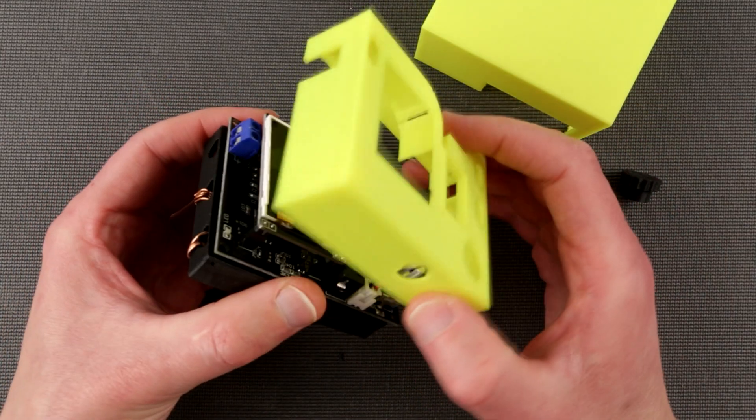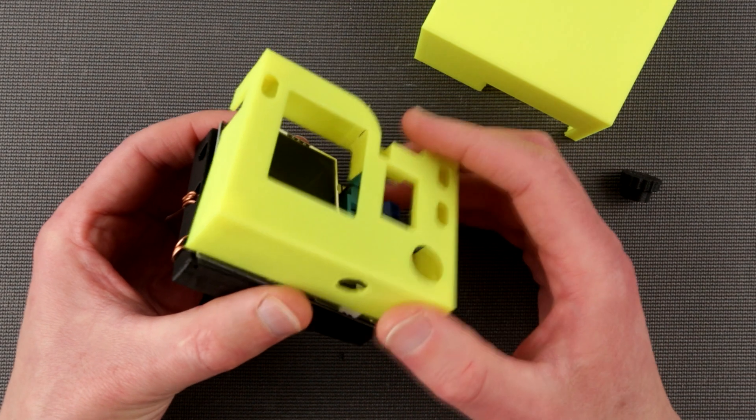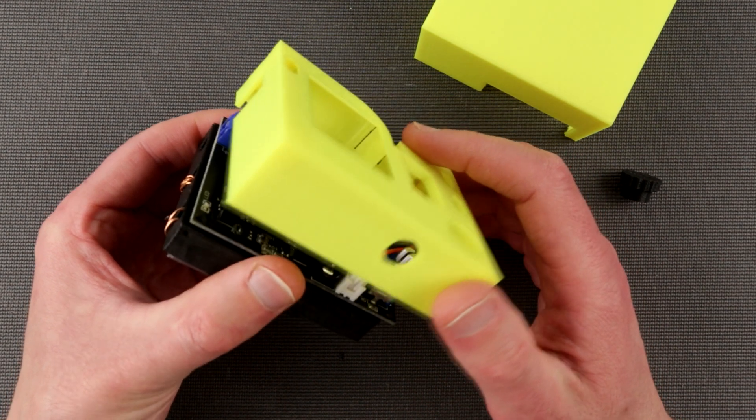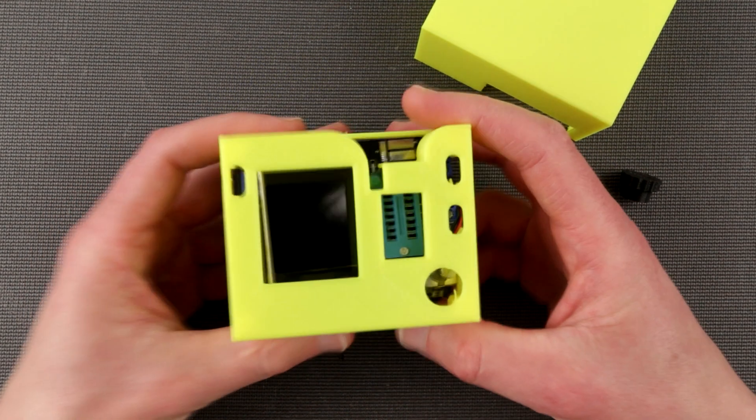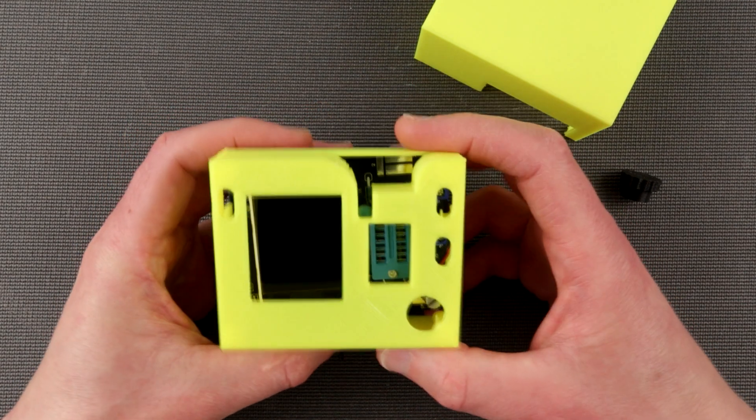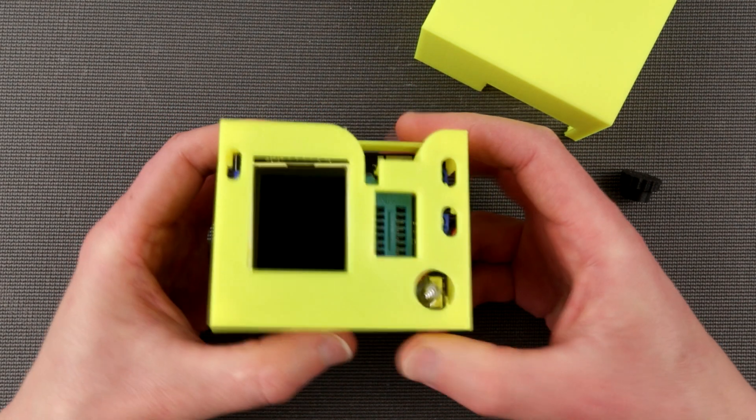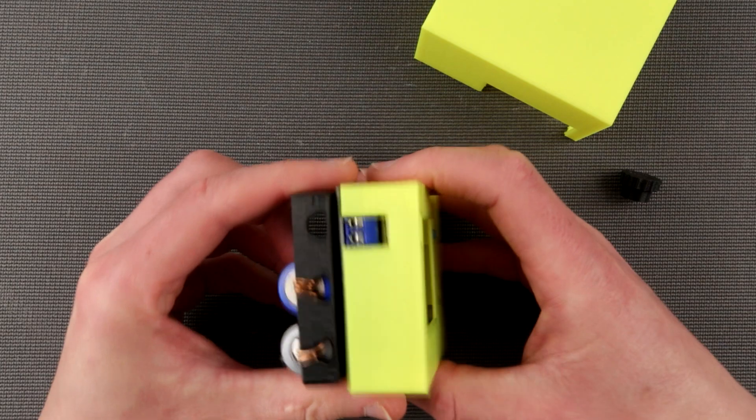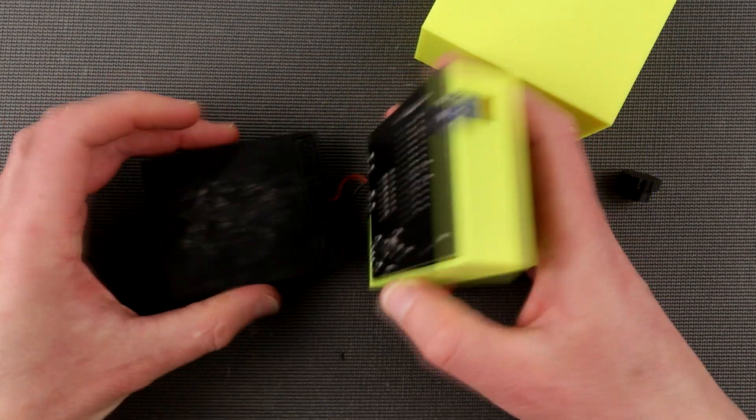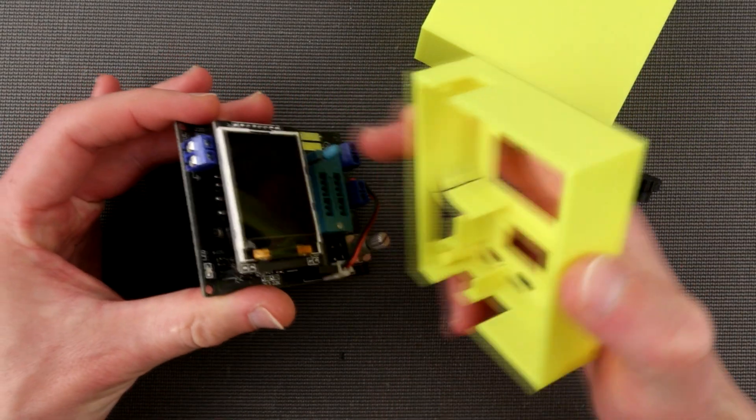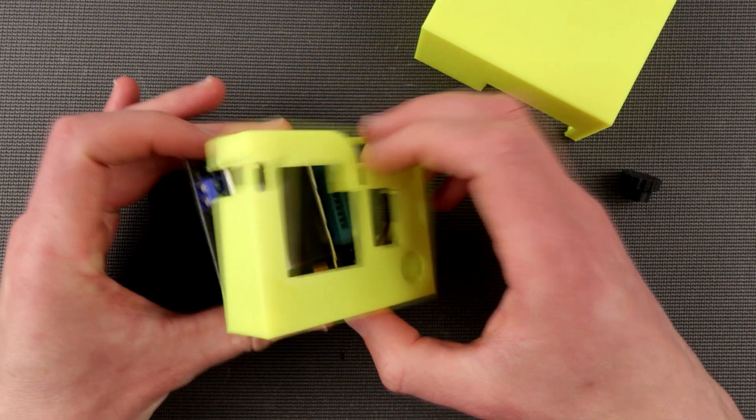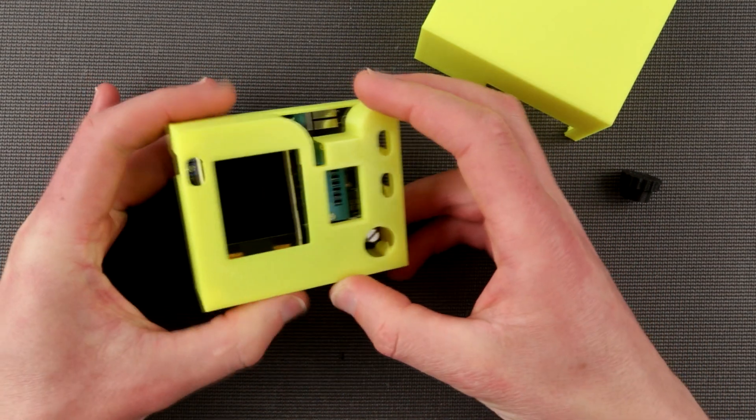So I found a very nice case on Thingiverse. I'll include his link to his original model. I think it was actually a really nice design and I liked it, so I decided to print it. So what's happened here? This GM328A goes right in there. Make sure this does not interfere.